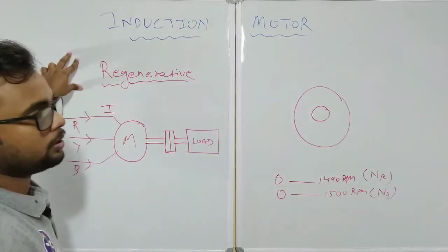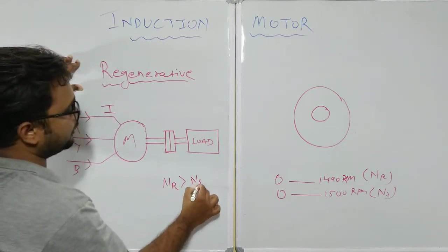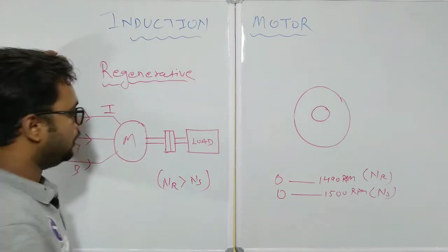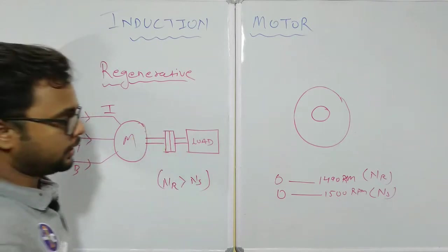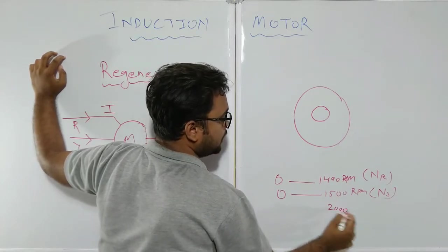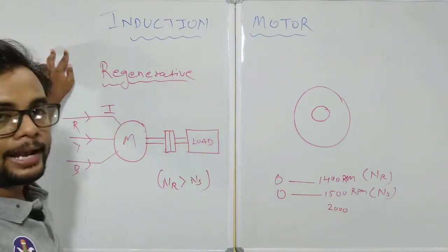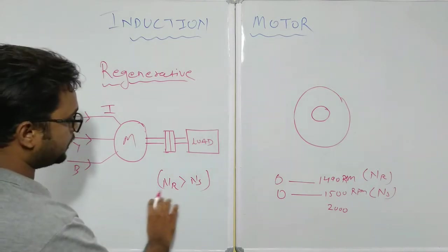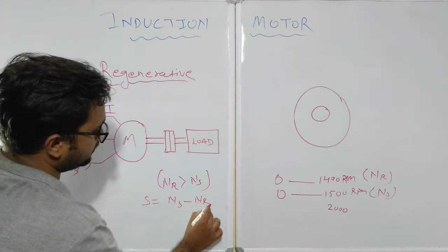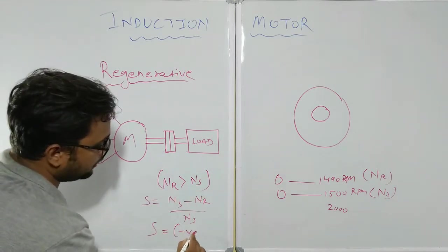In the case of an induction motor, it will only act as a generator when the value of NR is greater than NS. When NR is greater than NS, using the slip formula (NS minus NR), the total value of slip will become negative.